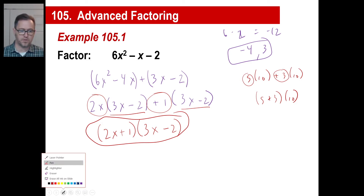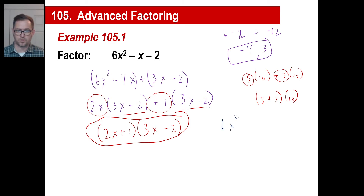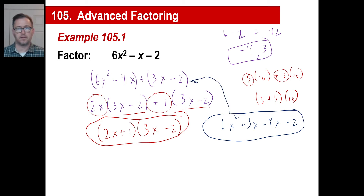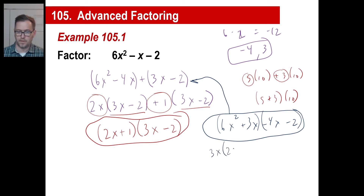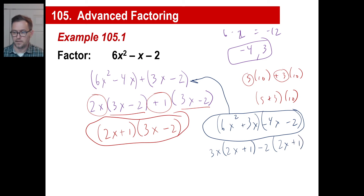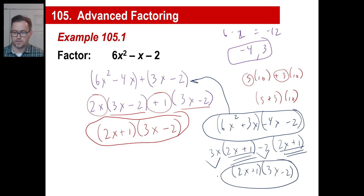Just to show you the order doesn't matter: if you wrote 6x squared plus 3x minus 4x minus 2 instead, you'd factor 3x out of the first group to get 3x times 2x plus 1, then factor negative 2 out of the second group to get negative 2 times 2x plus 1. You get 2x plus 1 times 3x minus 2 — exactly the same answer. 8 times 7, 7 times 8 — same thing.